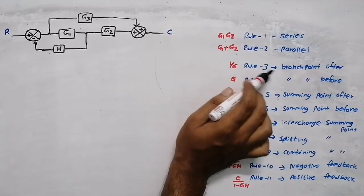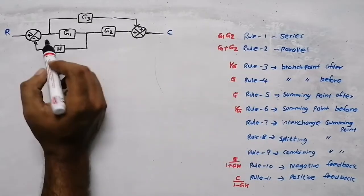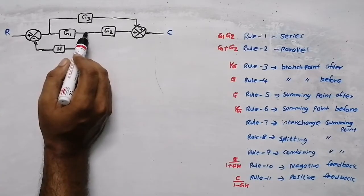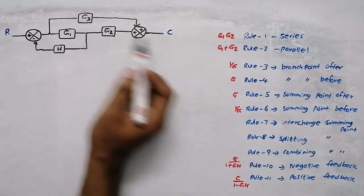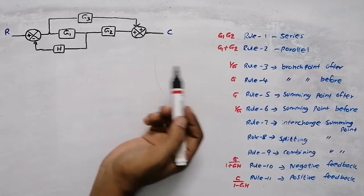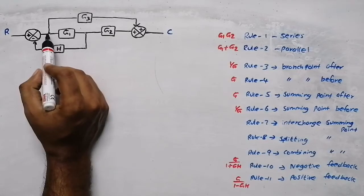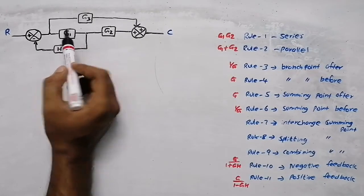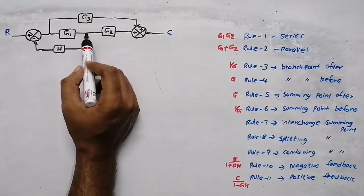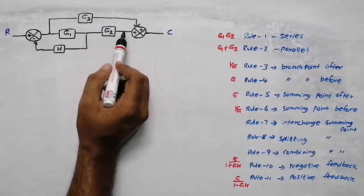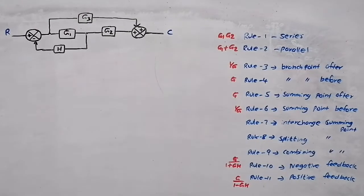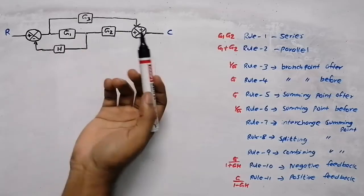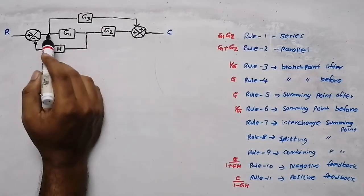For the third rule — branch point — there are two branch points in this diagram. We can move a branch point after the block. Either we can use this branch point and move it after this block, or we can use the other branch point and move it after that block. I am going to take the first branch point.